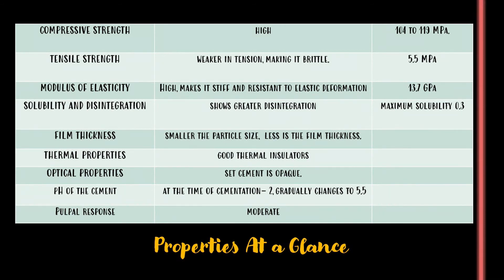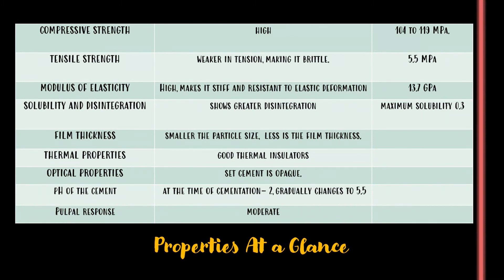Solubility and disintegration: zinc phosphate cement shows greater disintegration and maximum solubility of 0.3. Film thickness is smaller with smaller particle size. Zinc phosphate cements are good thermal insulators and the cement is opaque. The pH of the cement at the time of cementation is 2 and it gradually changes to 5.5.